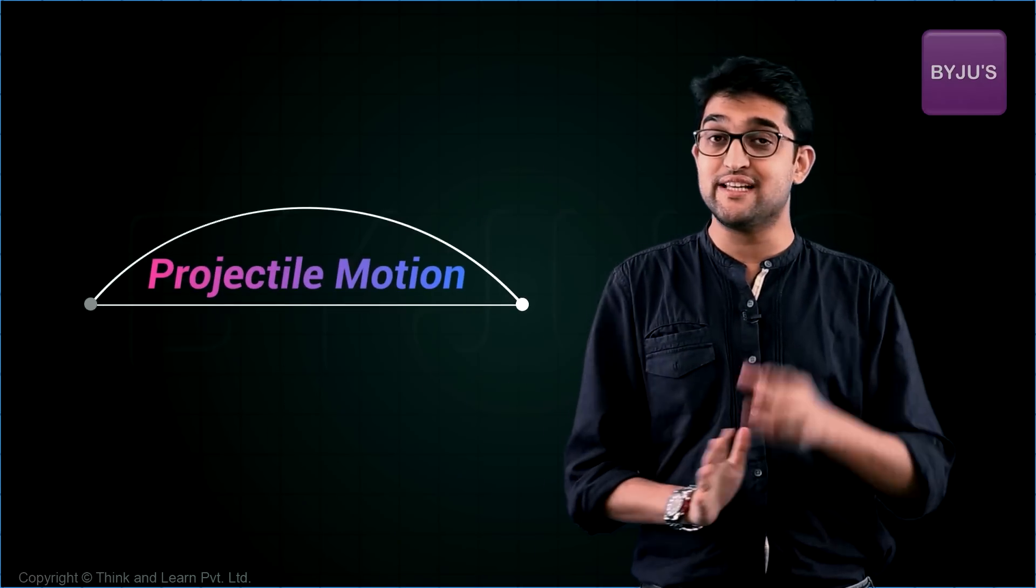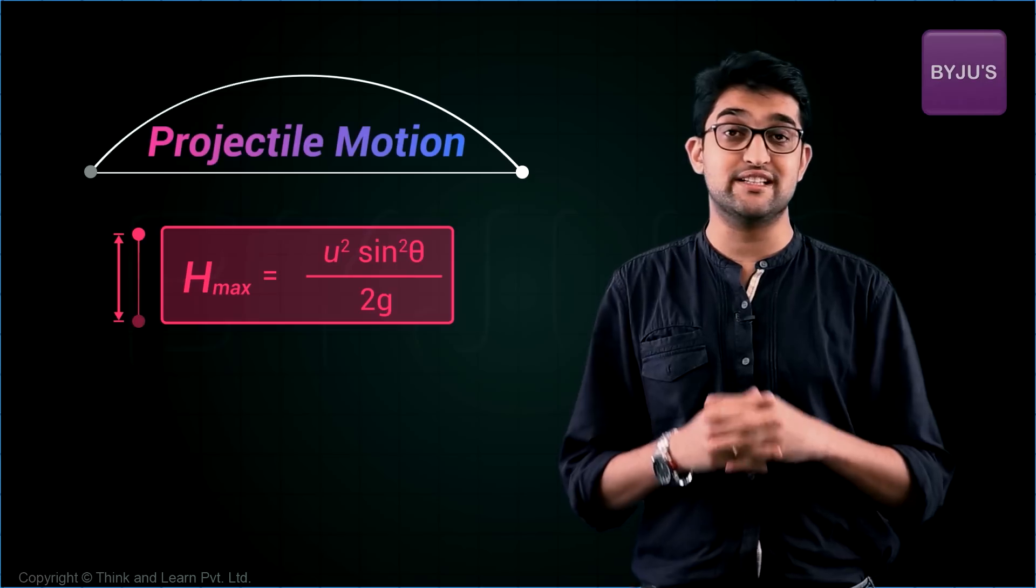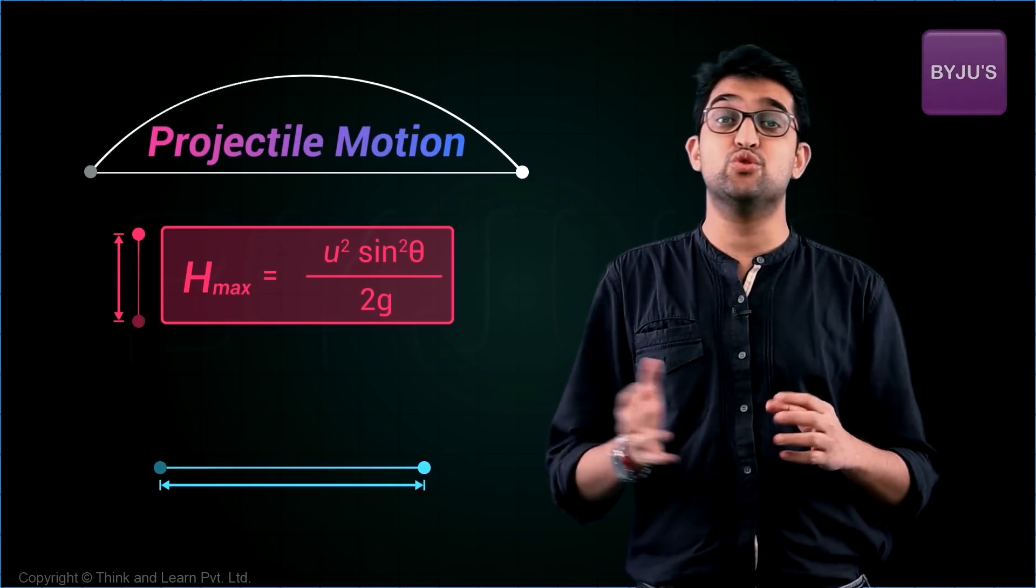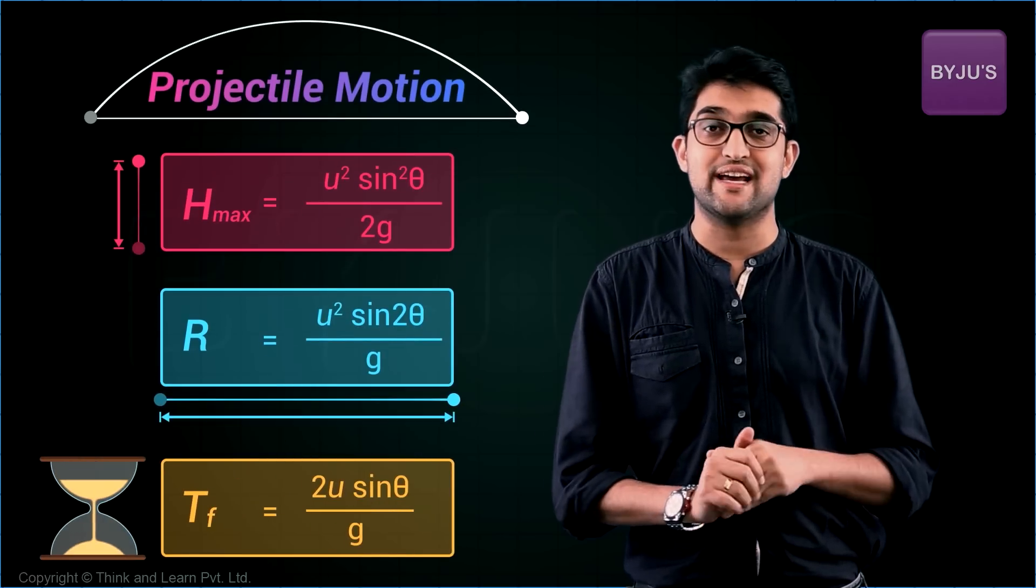As far as your syllabus is concerned, projectile motion is actually three formulas. Maximum height that's u-square sine-square theta by 2g, range that's u-square sine 2 theta by g, and time that's 2u sine theta by g.